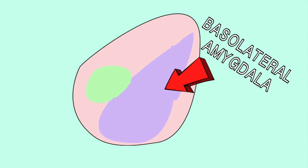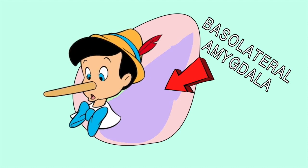The basolateral amygdala also plays an important role in a social context. Without it, you are naive, trusting and vulnerable, like Pinocchio. With it, you are vigilant and can tell if you're being treated fairly.